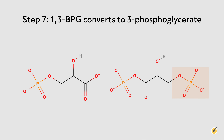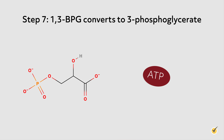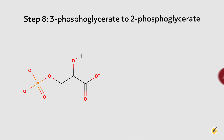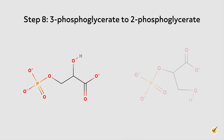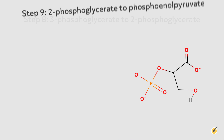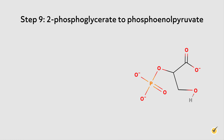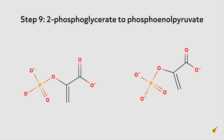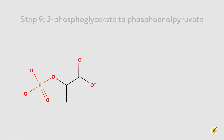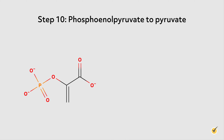Step seven: 1,3-bisphosphoglycerate is converted to 3-phosphoglycerate by the removal of a phosphate molecule from 1,3-bisphosphoglycerate. This action generates energy in the form of one molecule of ATP. Step eight: 3-phosphoglycerate is converted to 2-phosphoglycerate to generate another high-energy phosphoryl transfer compound. Step nine: 2-phosphoglycerate is converted to phosphoenolpyruvate, or PEP. This is another high-energy compound and is therefore unstable, so it readily converts into pyruvate in the next step.